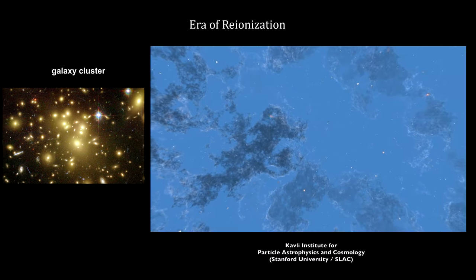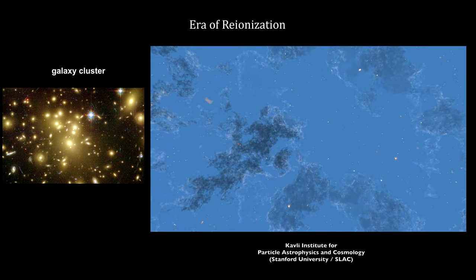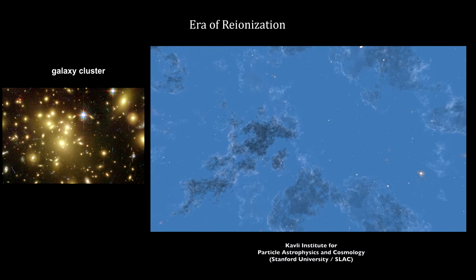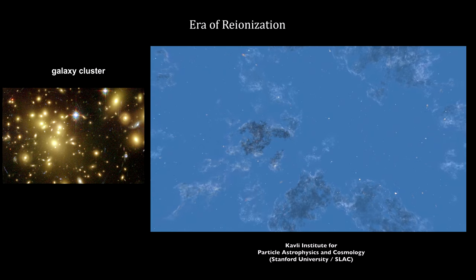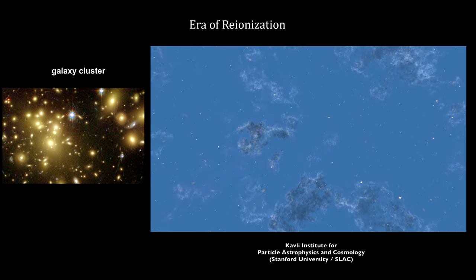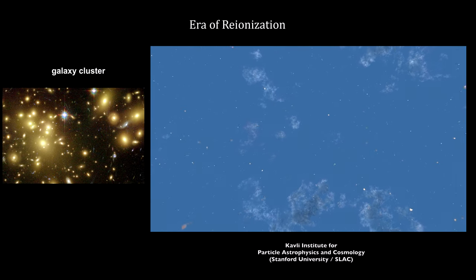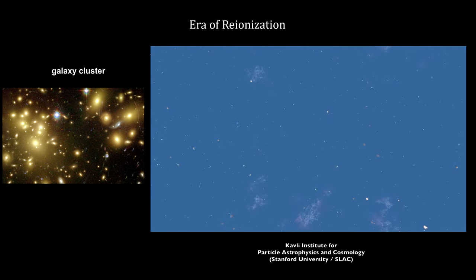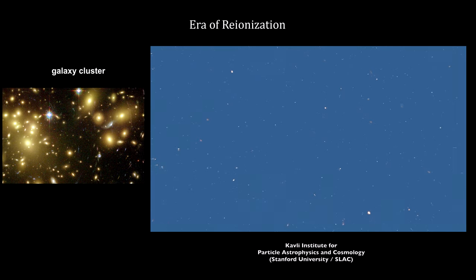In order to better understand how this reionization actually worked, the James Webb Space Telescope was built with infrared capabilities designed to observe this process that began 13 billion years ago.